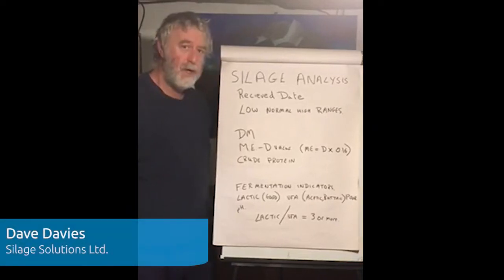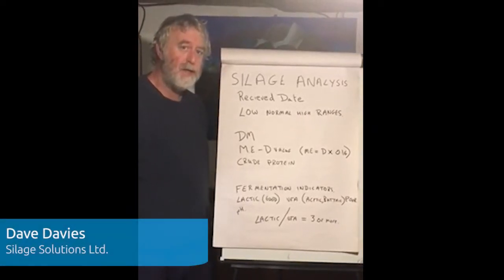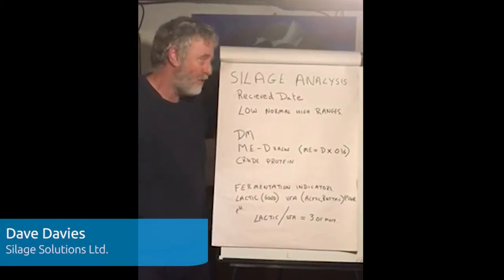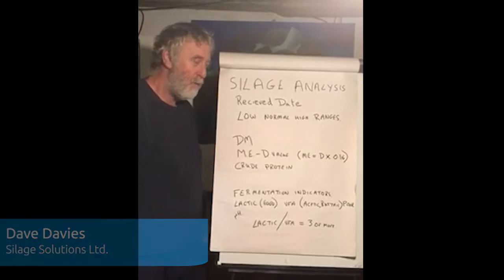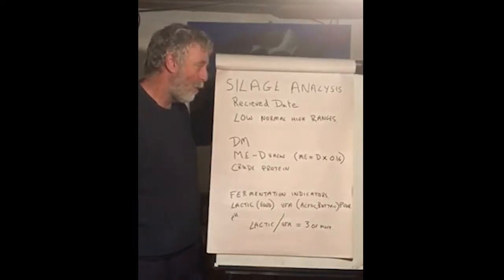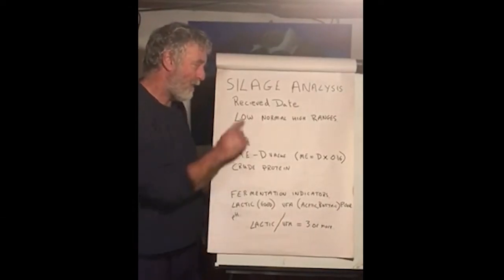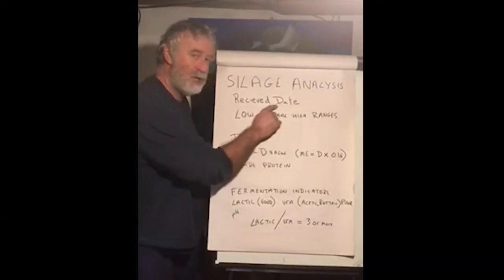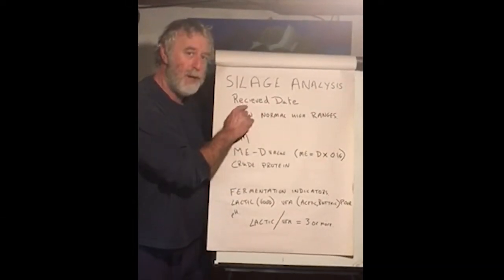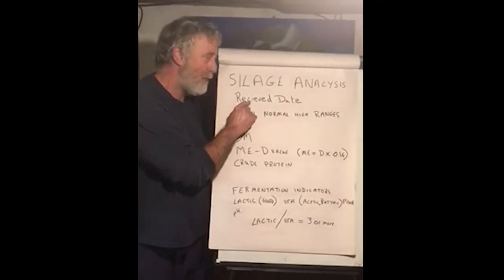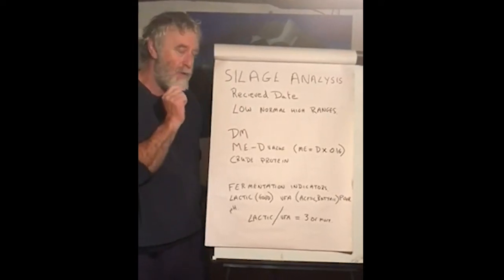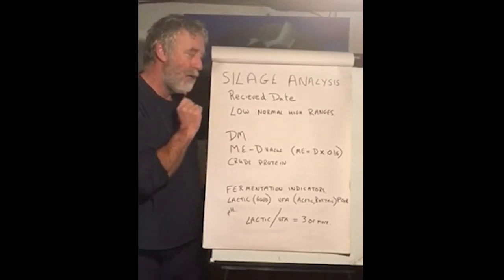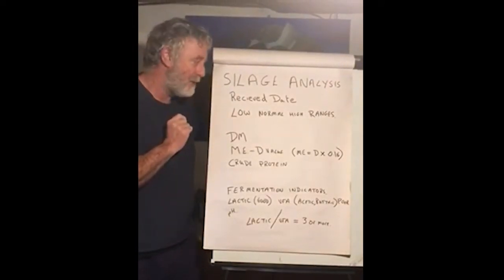Today I want to discuss understanding the silage analysis sheet. The first thing you look at, normally in the top right hand corner, is the receive date. That should not be a Monday. If it's a Monday, that means your sample has sat in the post over the weekend and it means it's deteriorated.